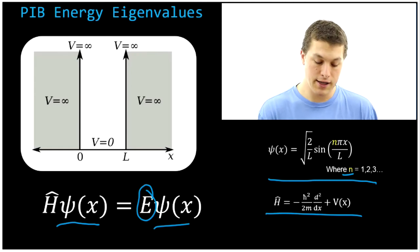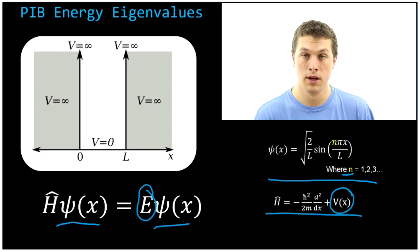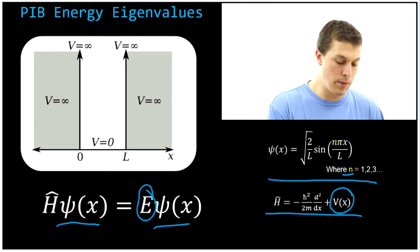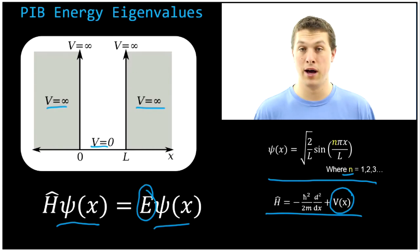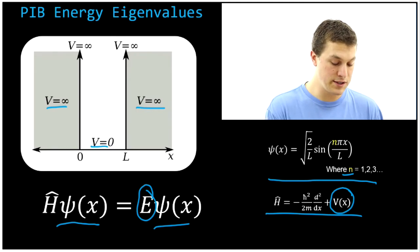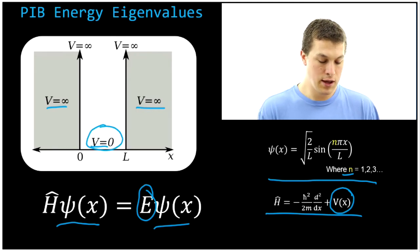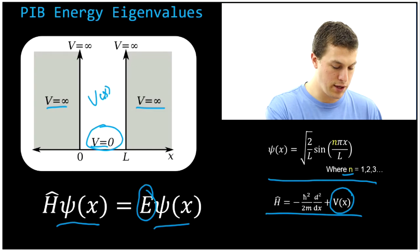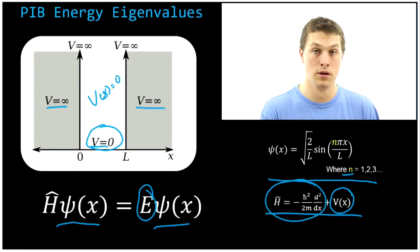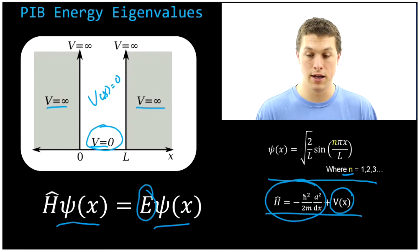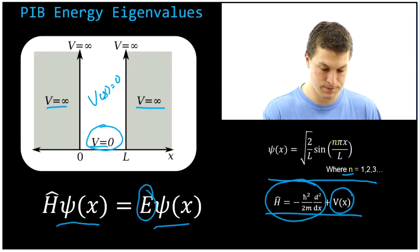One thing to remember before we start is that the potential, this V of X, that second term in our Hamiltonian, is the potential inside the well. The potential inside the well is zero, and the walls are infinite. You can imagine you've dug an infinitely deep well and now you're dropping an electron in it. But importantly, since the potential inside the well is zero, our V of X in our Hamiltonian is equal to zero. So we're only going to have to apply this first term when we calculate the energy of these eigenvalues.